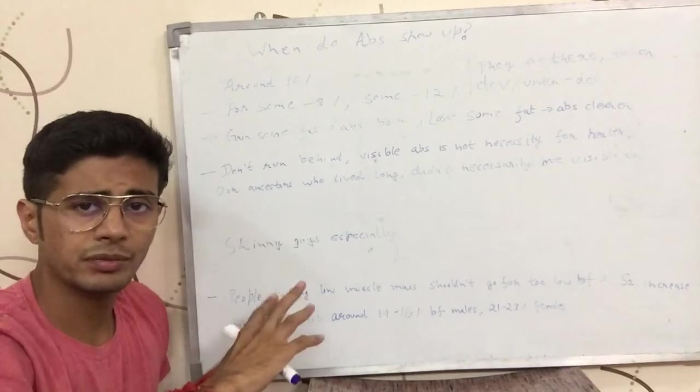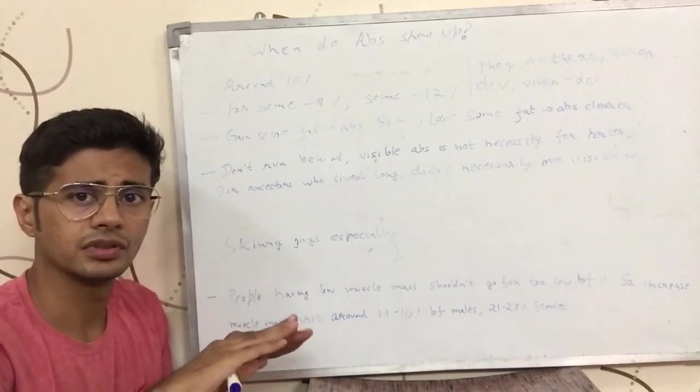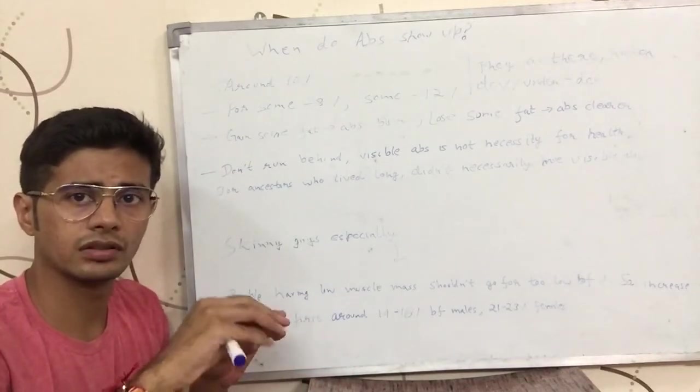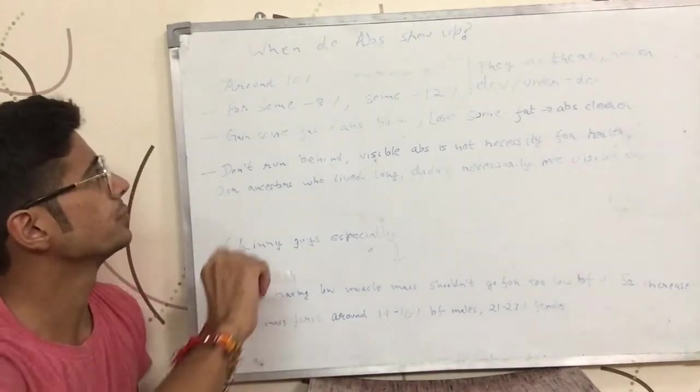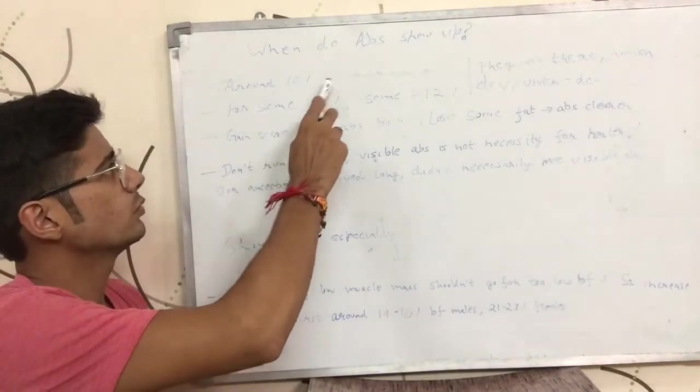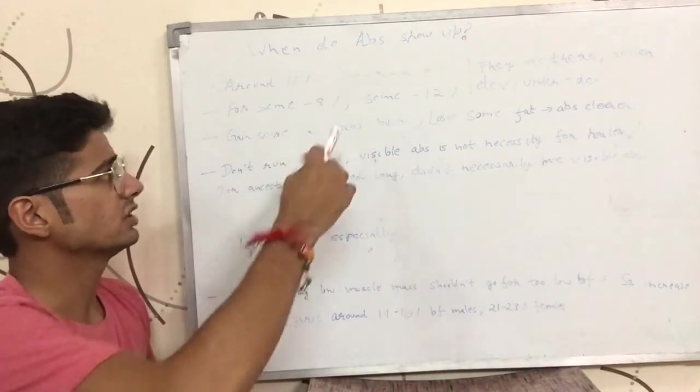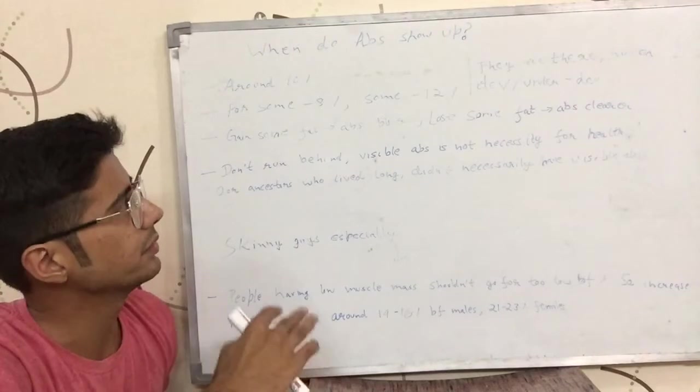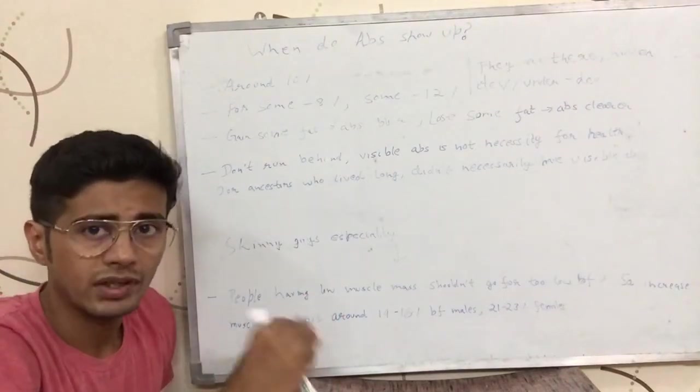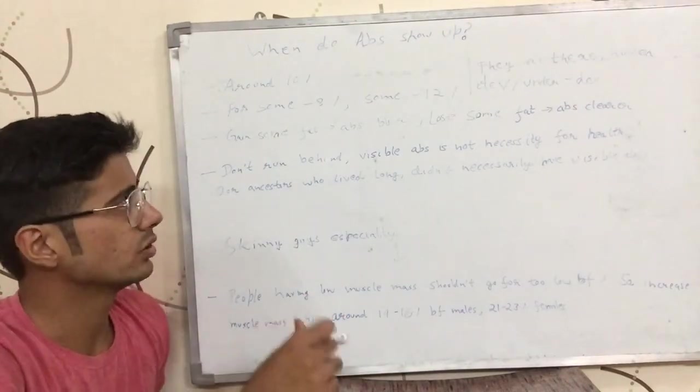So I talked about this in my previous video that you add 7 to 8 to the male fat percentage to get the corresponding number for the female fat percentage. So around 10% body fat your abs would show up. For some it can show up around 7 to 8% body fat, and for some it can show up around 12 to 13% body fat. It depends on the body.